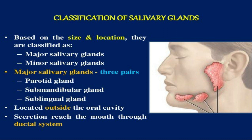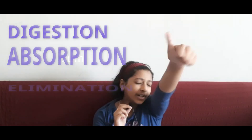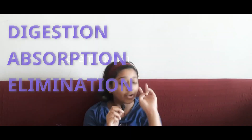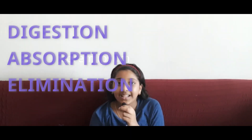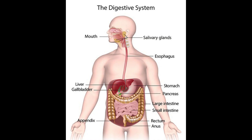Our secretion, which is saliva, reaches our mouth through the ductal system. The digestive system has three main functions: digestion, absorption, and elimination. Digestion involves the breakdown of our food into smaller and smaller components until they can be absorbed and assimilated into our body.